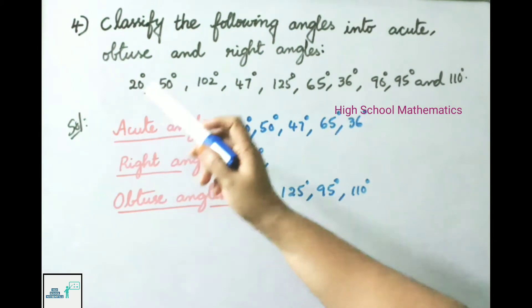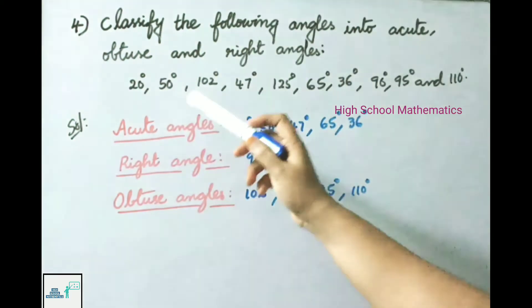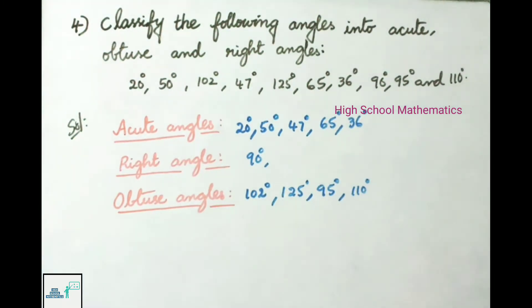See now question number 4. Classify the following angles into acute, obtuse, and right angles. Let us see the solution.